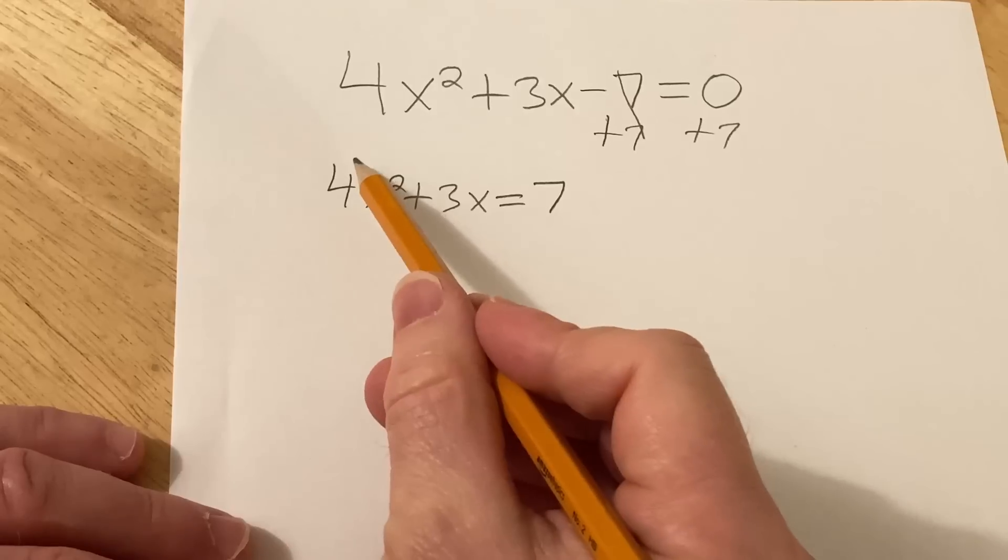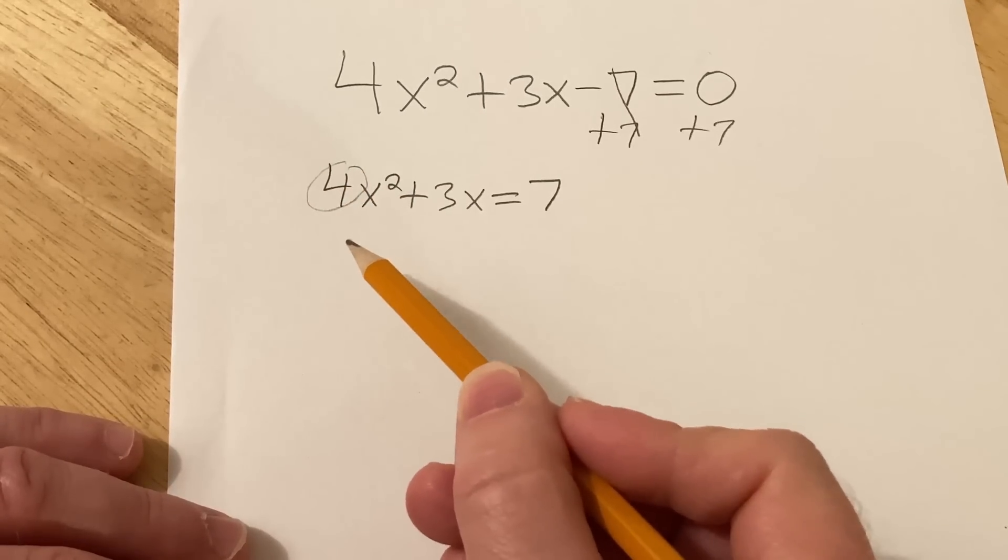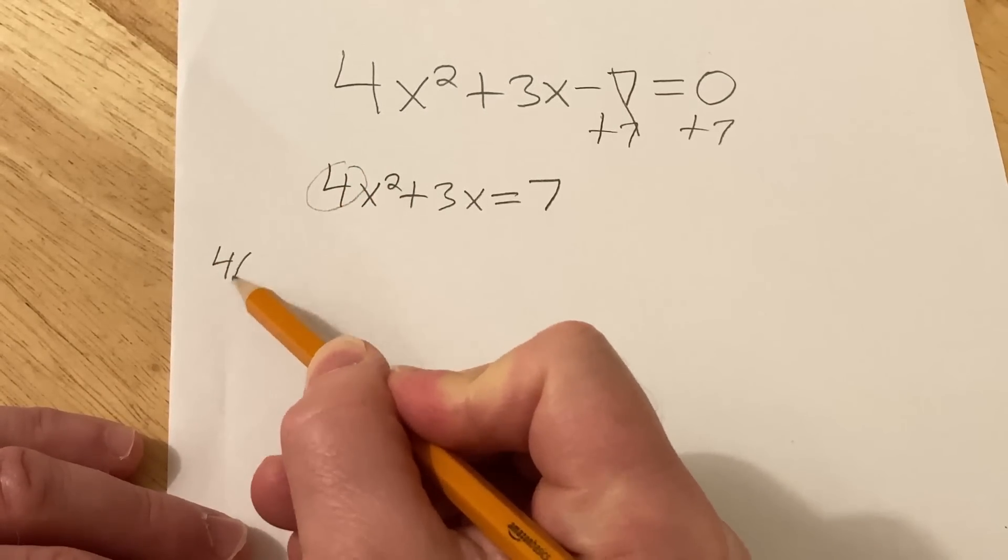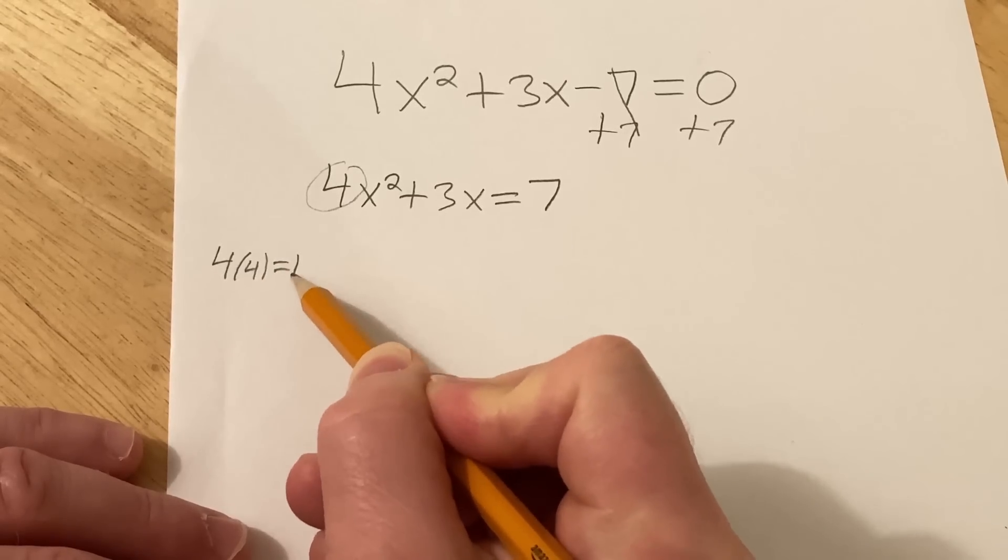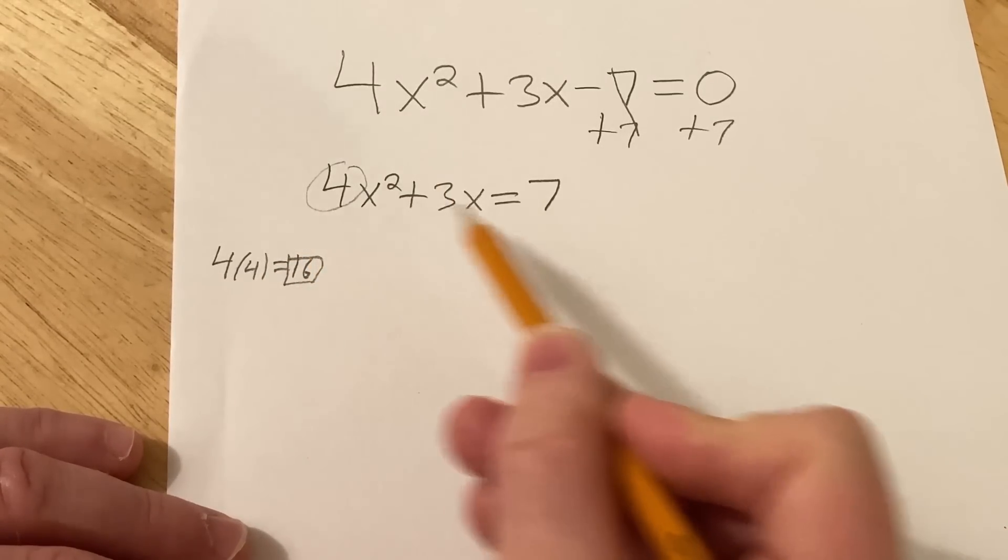The next step is to take this number here, the coefficient of x squared and multiply it by 4. So I'll do it on the side. 4 times 4 is 16. Now you take this number and you multiply your entire equation by 16.